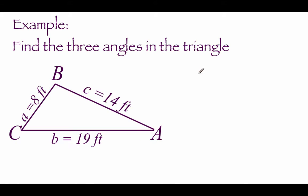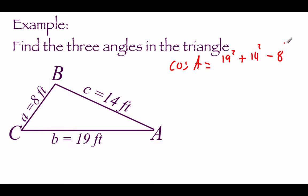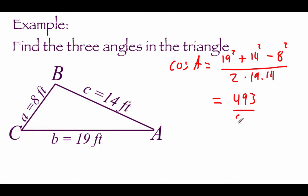The next example is very similar to the last one. We've got three sides and we're going to find our three angles. Starting with angle A: cosine of A equals B squared — which is 19 squared — plus C squared, which is 14 squared, minus A squared, which is 8 squared, all over 2 times 19 times 14. Simplifying the top we get 493; on the bottom we get 532. Dividing that gives 0.9267, and taking the inverse cosine, angle A is 22.1 degrees.